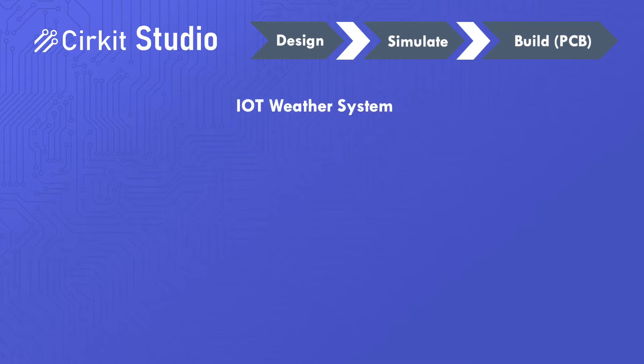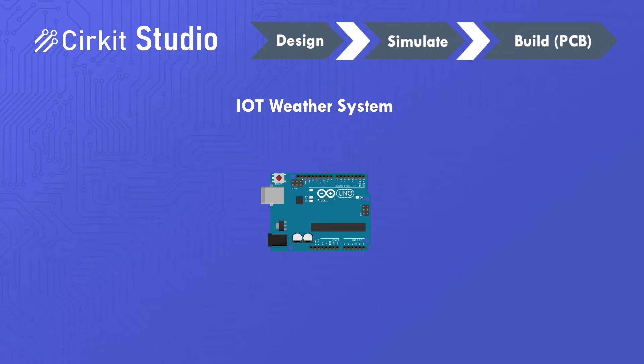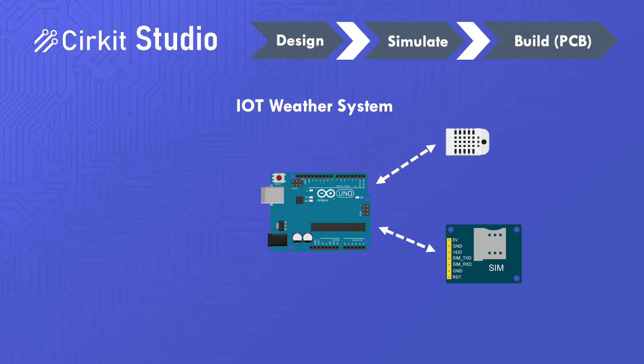Imagine a student who wants to prototype an IoT weather system. Amongst other things, this student recognizes that they'll need to incorporate a microcontroller such as an Arduino, sensors to collect measurements such as a humidity sensor, some form of communication to the cloud — in this case, a GSM module — and lastly, some sort of power supply.